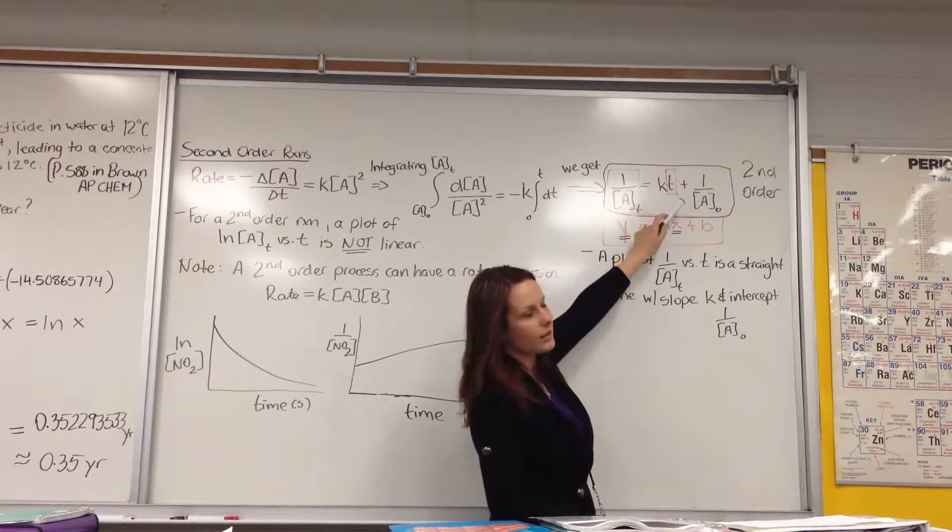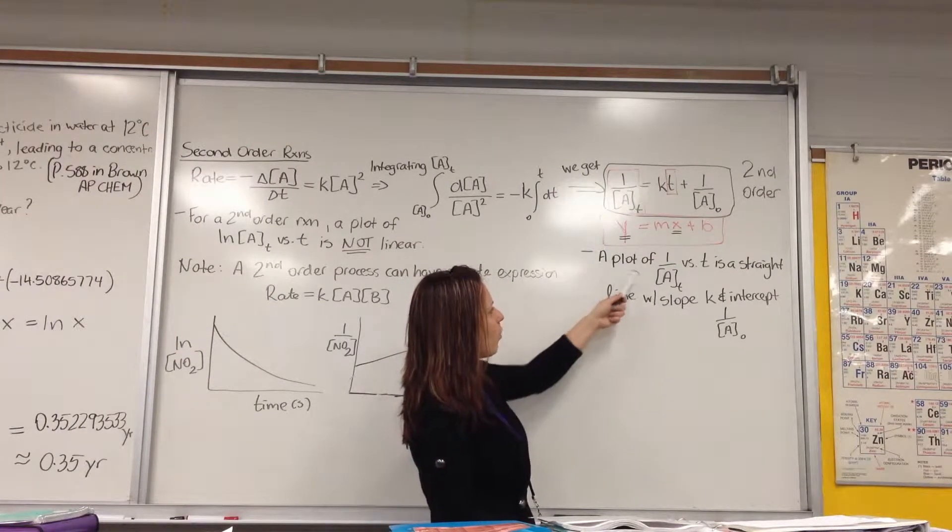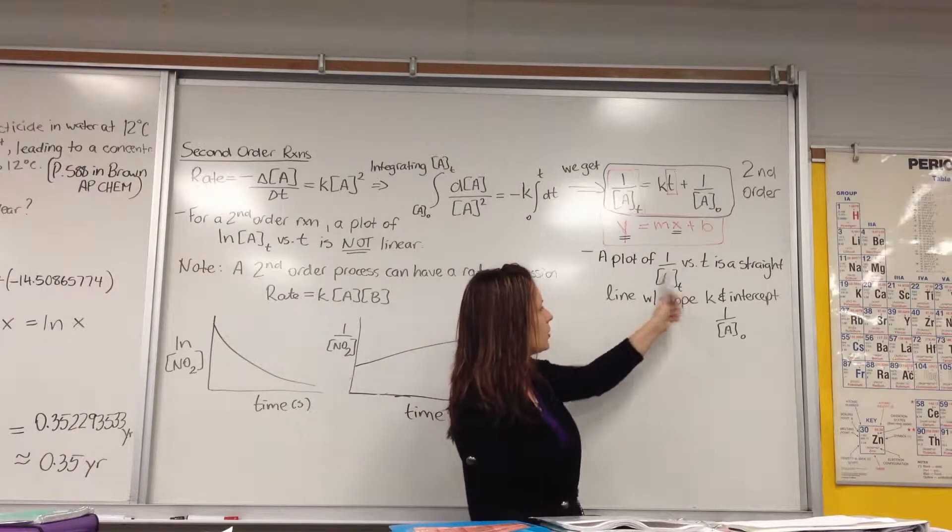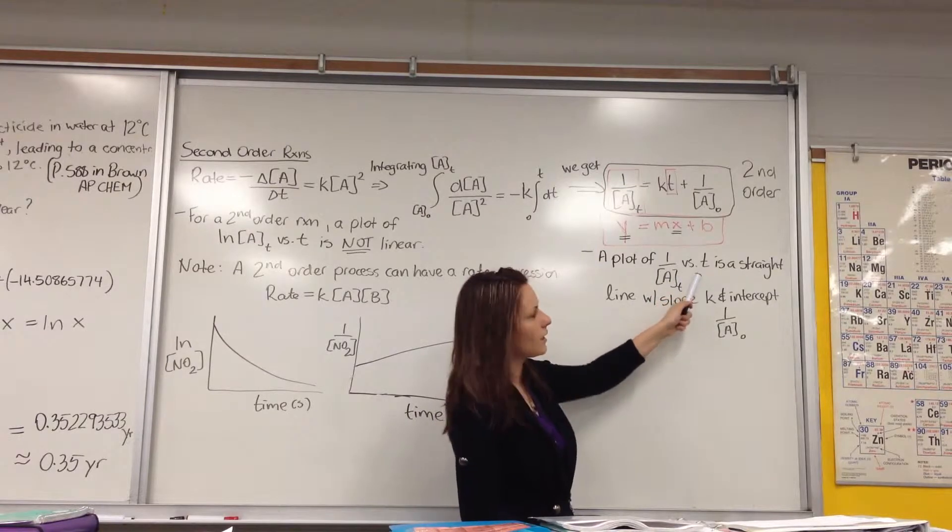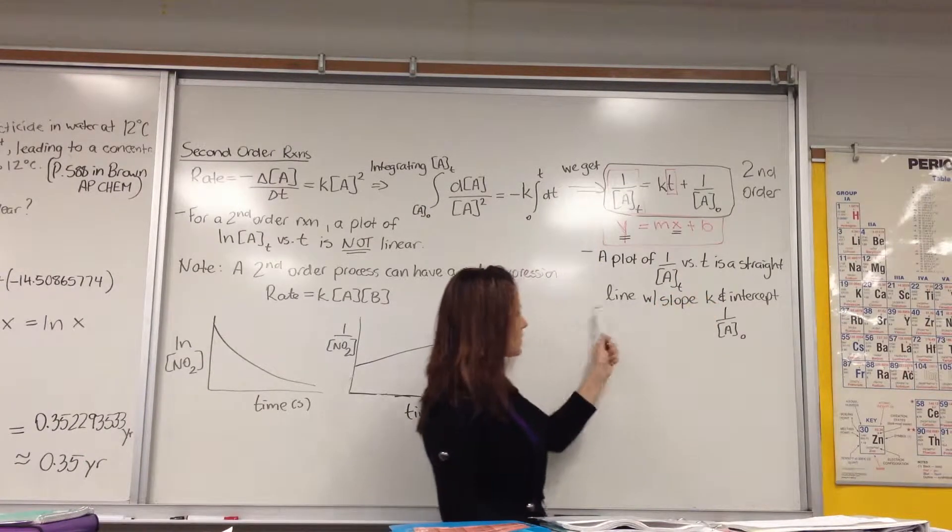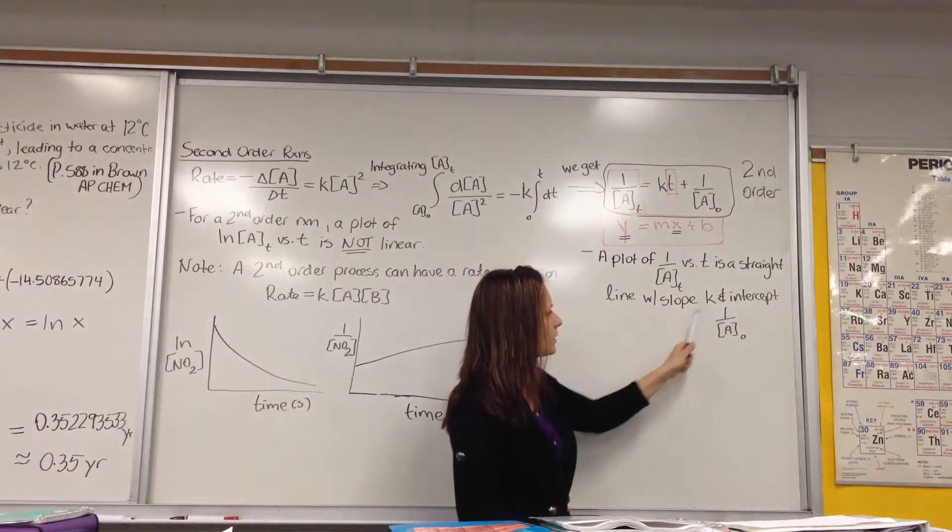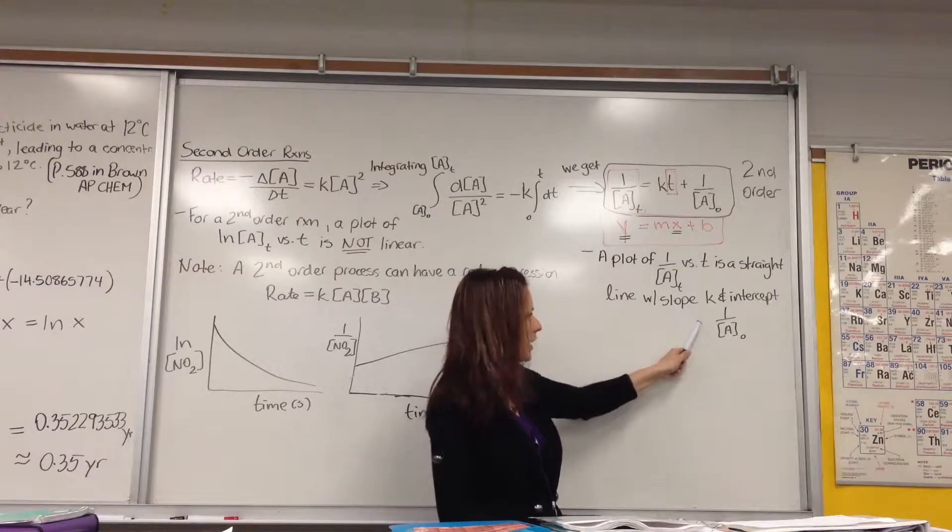And 1 over A-naught is our y-intercept. So if you were to plot 1 over A at T as your y versus T as your x on the horizontal axis, that will give us a straight line with a slope of positive k this time, and the intercept will be 1 over A-naught.